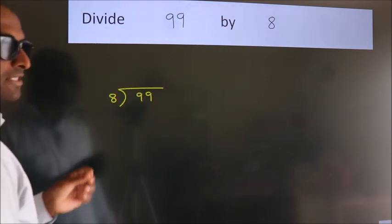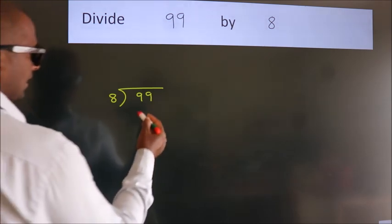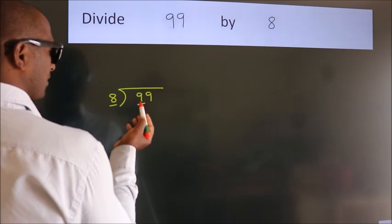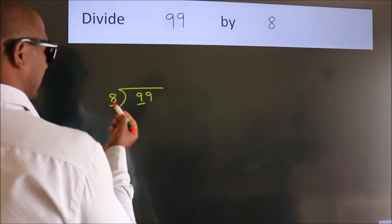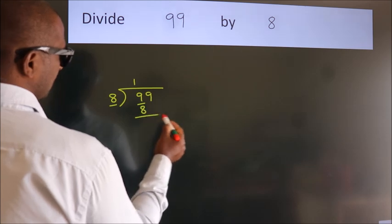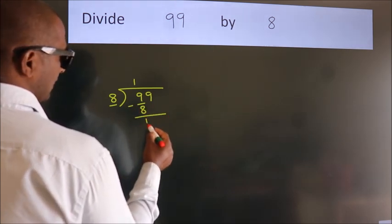This is your step 1. Next, here we have 9, here 8. A number close to 9 in 8 table is 8 once 8. Now, we should subtract. We get 1.